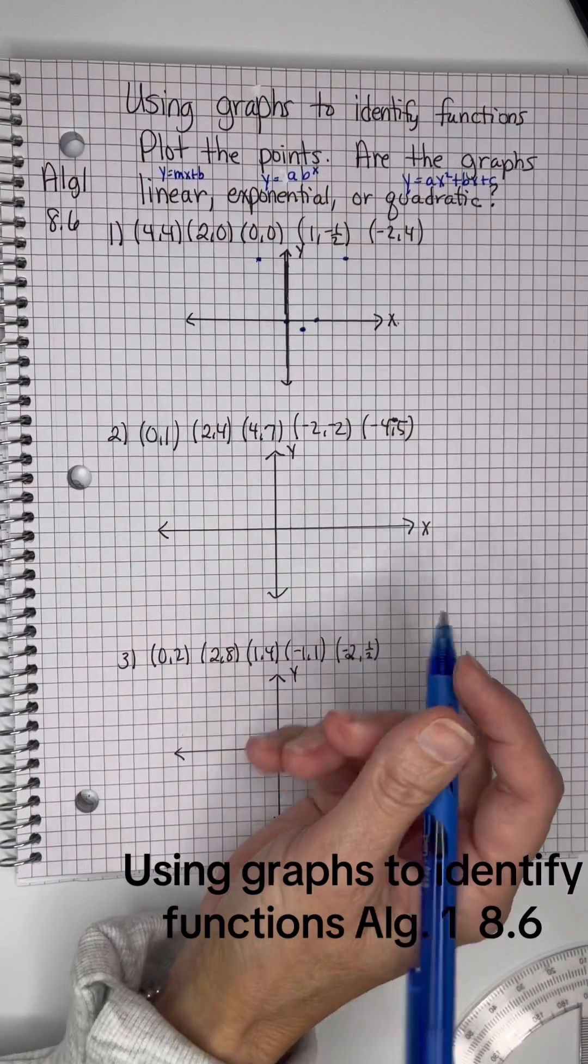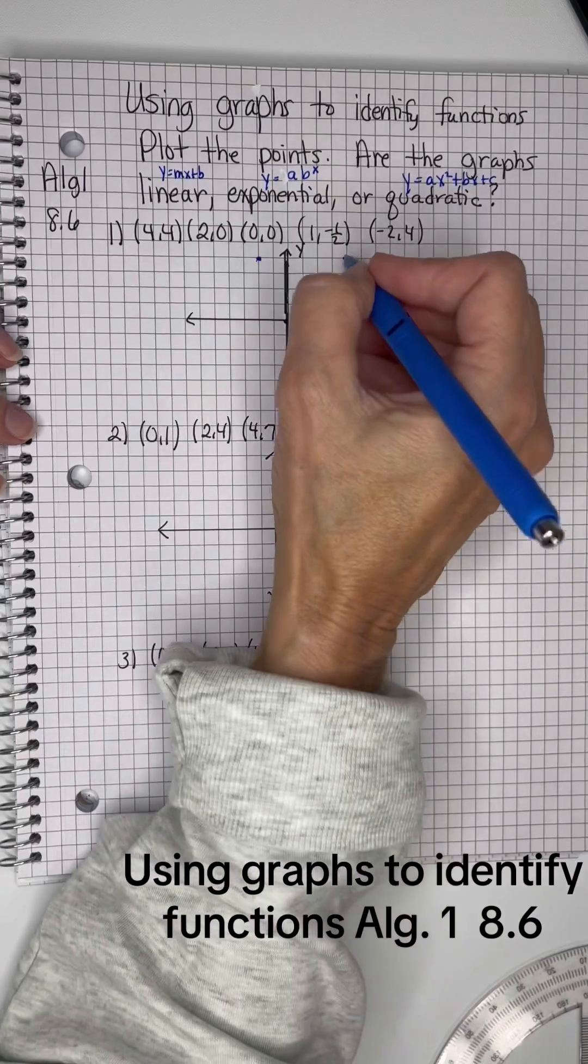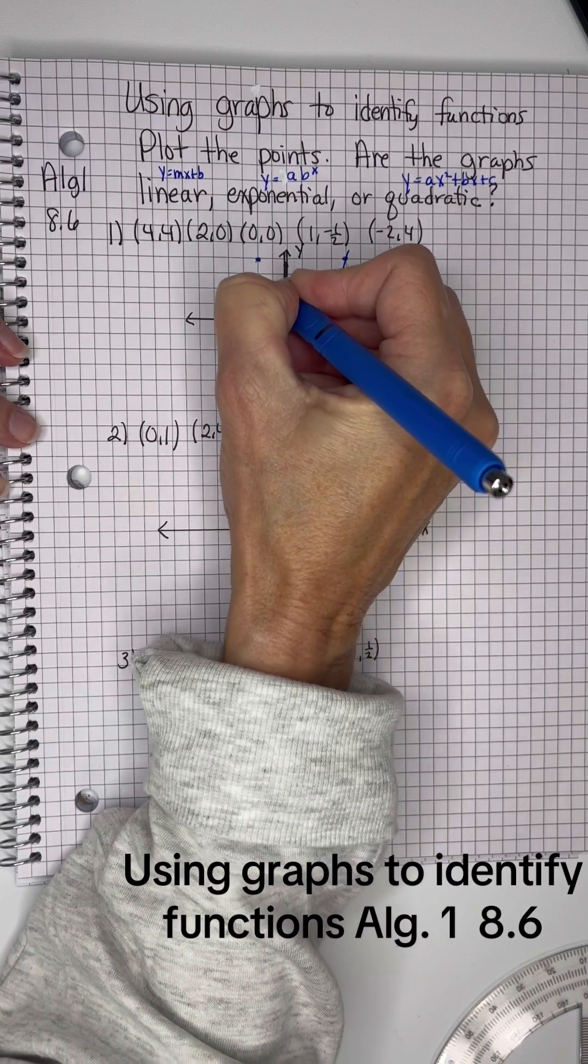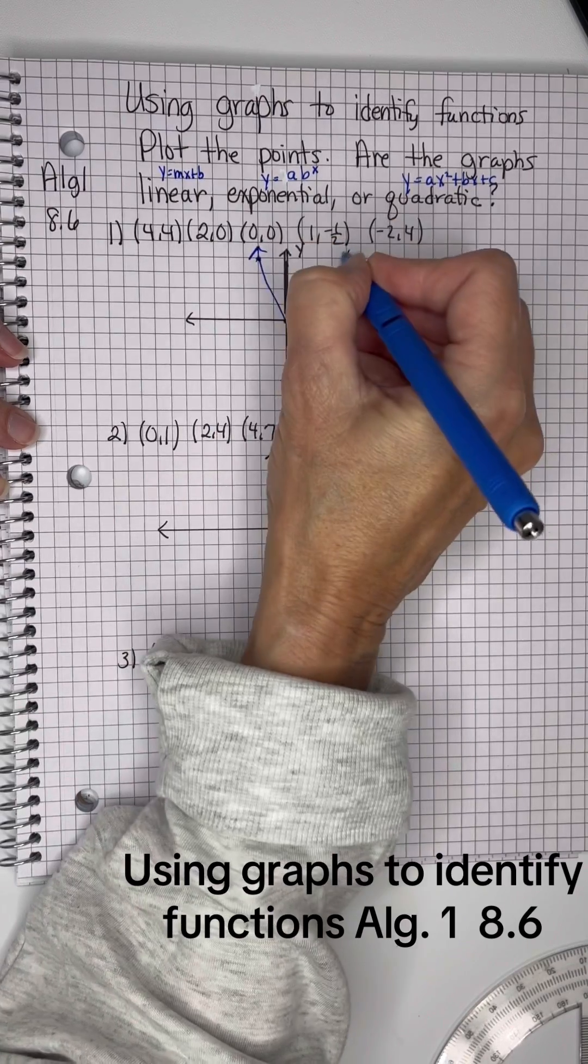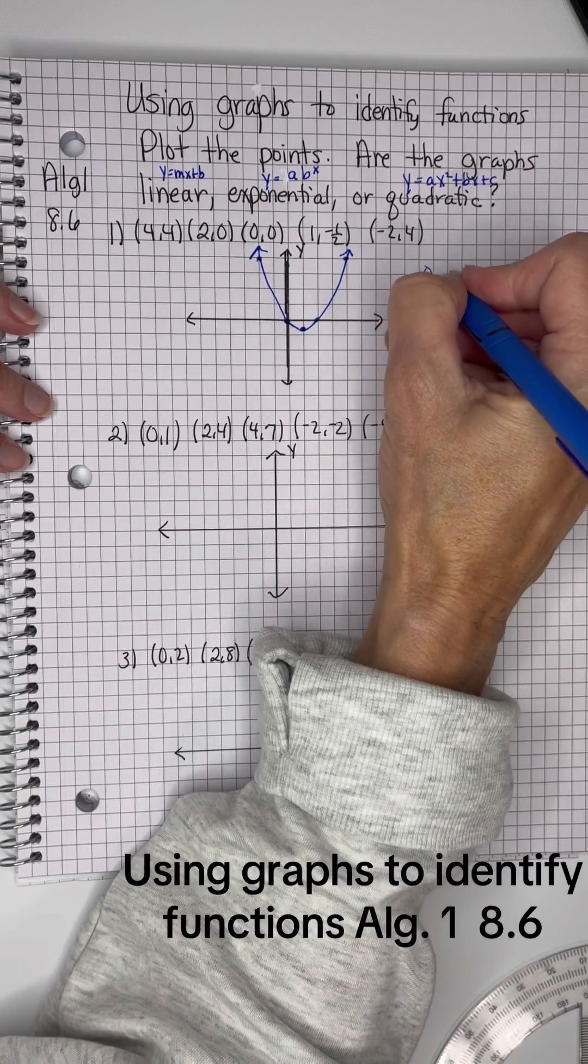Okay, so if you only have those points, what does that appear to be? Well, take a look at it, and though you don't have everything, that appears to be a U-shape, so that would be a quadratic.